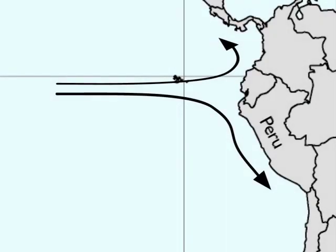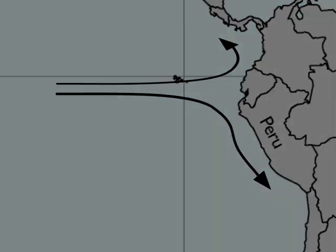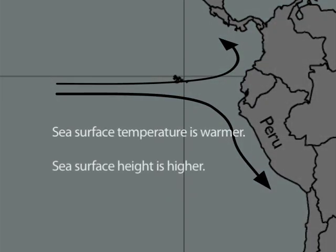As a result of the Kelvin wave propagation and mass of water flow across the ocean, the temperature near the ocean surface increases at the Peruvian coast, and the sea surface height is higher than normal.